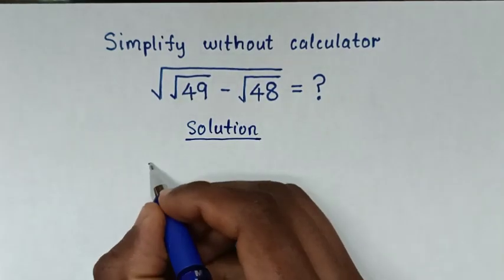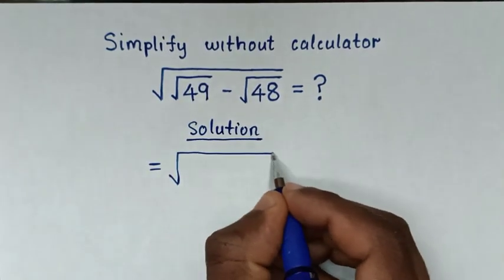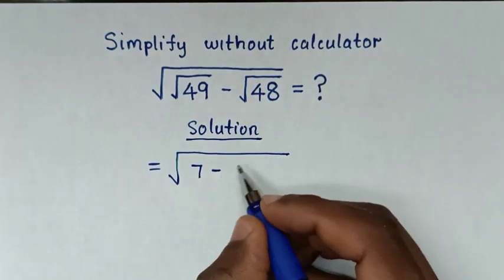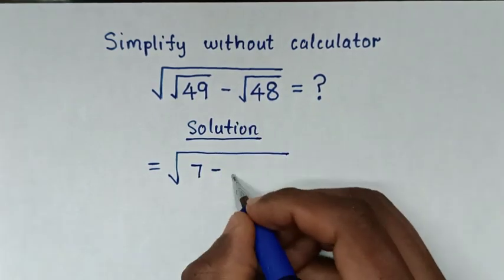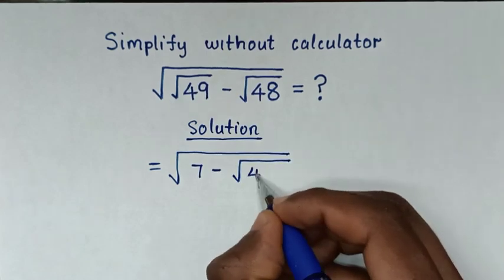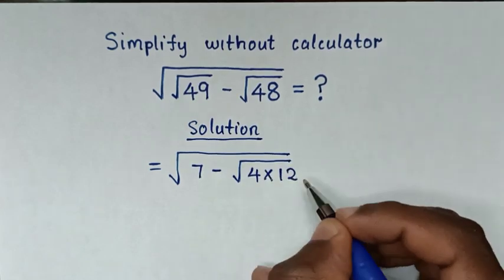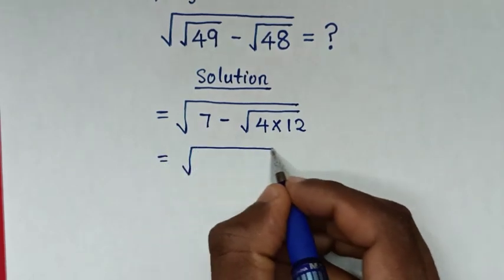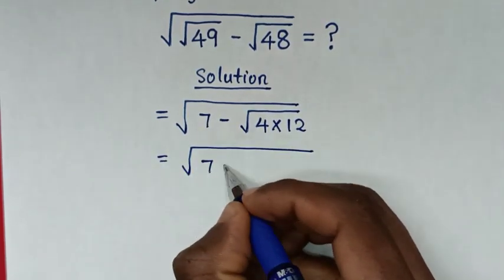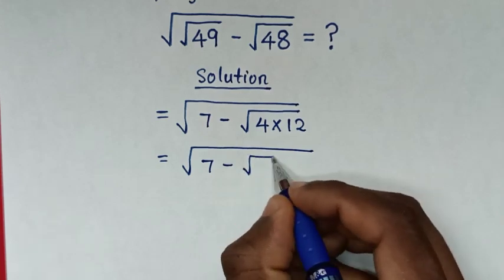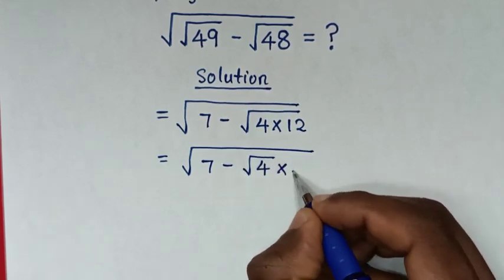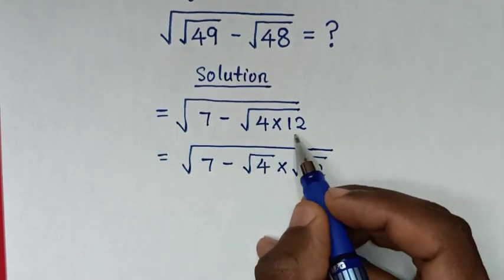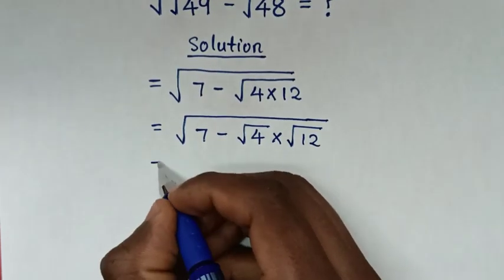So it will be equal to square root of: square root of 49 is 7, minus square root of 48, which is the same as square root of 4 times 12. Then it will be equal to square root of 7 minus square root of 4 times square root of 12 — we separate this.